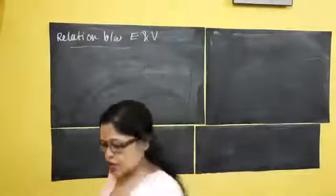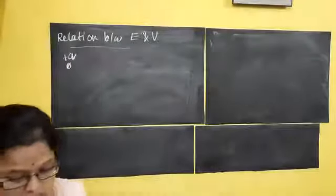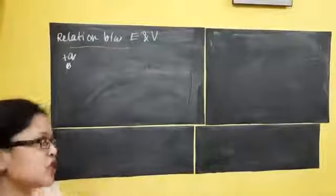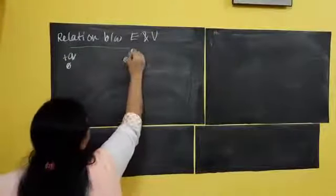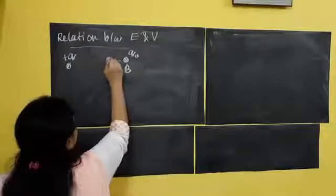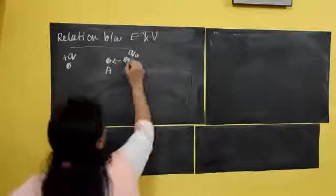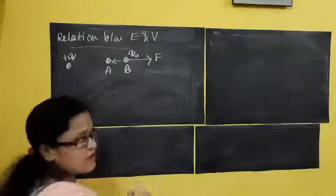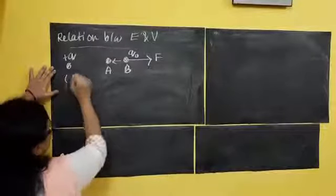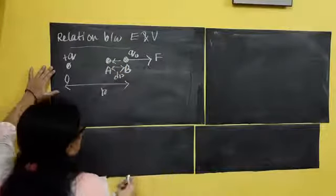Suppose I am having a positive charge plus Q. I am bringing a charge plus Q0 from B point towards A. Since both are positive charges, the direction of force will be in this direction because they repel each other. Let's consider the distance from point O up to B is R, and this small distance is dL, as we have done in the first case of potential.